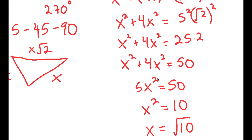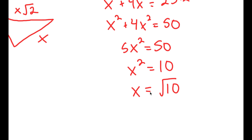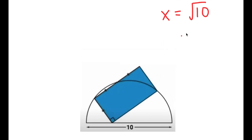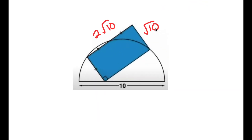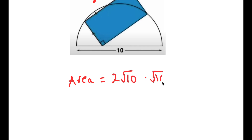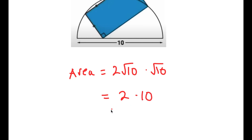Now that x = √10, let me draw a clean triangle. This side is x = √10 and this side is 2x = 2√10. The area of a rectangle is width times length, so area = 2√10 × √10 = 2 × 10 = 20 square units. So that's my area.